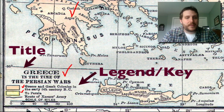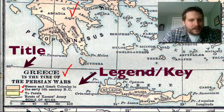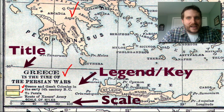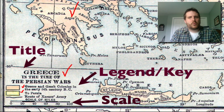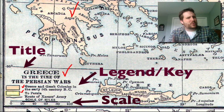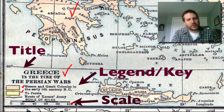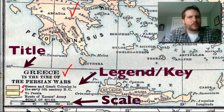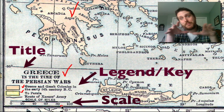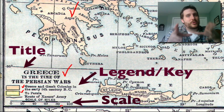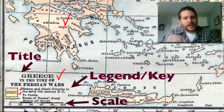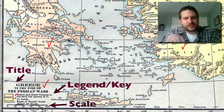After the title and the legend, the next thing most maps have in common is a scale. The scale tells you how big a piece of the world you're looking at. Here, this small section equals 20 miles, and this whole line equals 100 miles, so you can use that to understand the size of the area you're viewing.